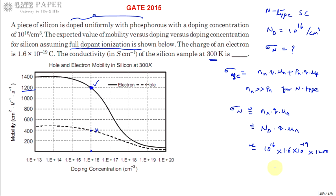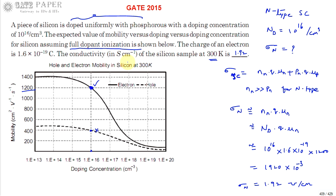So the conductivity is: σ = 1200 × 1.6×10^-19 × 10^16 = 1200 × 1.6×10^-3 = 1920×10^-3 = 1.92 S/cm (siemens per centimeter or mho per centimeter). The conductivity of the n-type semiconductor is 1.92 S/cm.